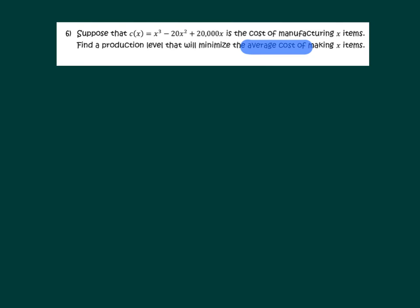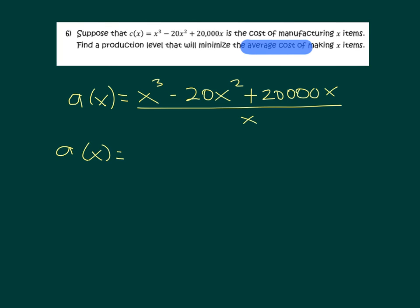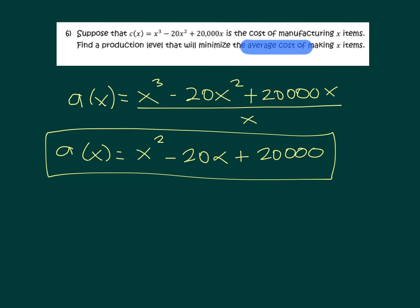So, the function in this case, I will write it as a of x, which is average cost. It will be the same function of cost, x³ minus 20x² plus 20,000x, but divided by x, which is the number of items that we are producing. So, we have to divide the total cost of producing everything into the number of items that we are producing. And if we simplify that function, the average cost function will be x³ over x is x², 20x² over x is 20x, and 20,000x over x is just 20,000. So, now we have the function that we want to, in this case, minimize.